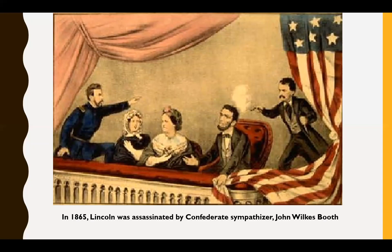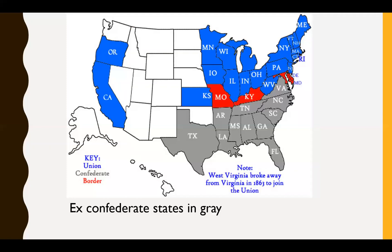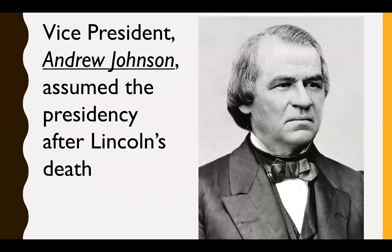Right off the bat the president and Congress were disagreeing on how to bring the Confederate states back. But then in 1865, Lincoln was assassinated — killed by Confederate sympathizer John Wilkes Booth. Here's a map showing the ex-Confederate states in gray, the border states that had slavery in red, and the free states in blue.